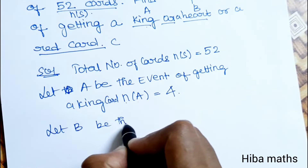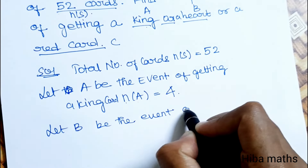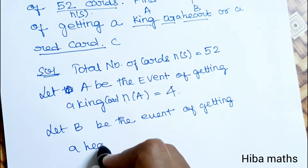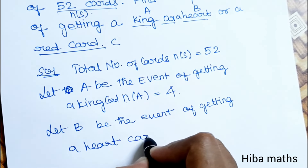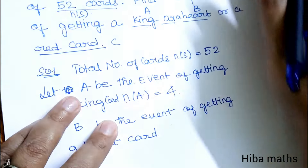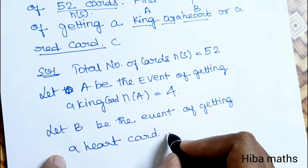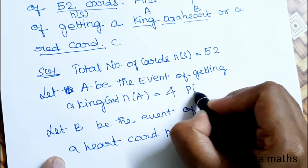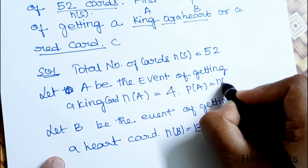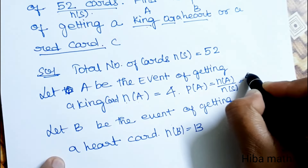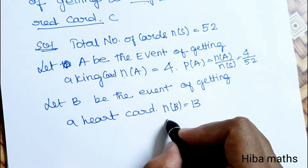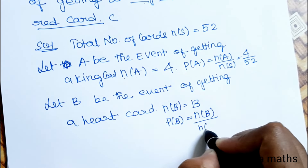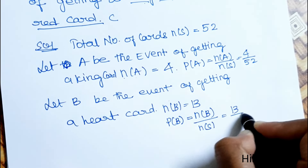Let B be the event of getting a heart. There are 13 heart cards, so n(B) is 13. Therefore, P(B) = n(B) / n(S) = 13 by 52.